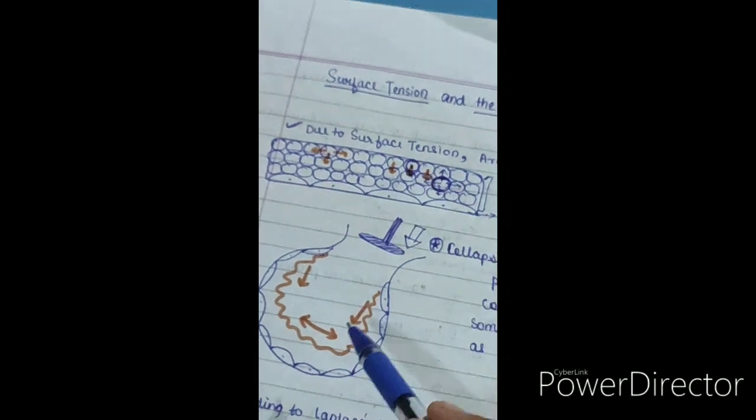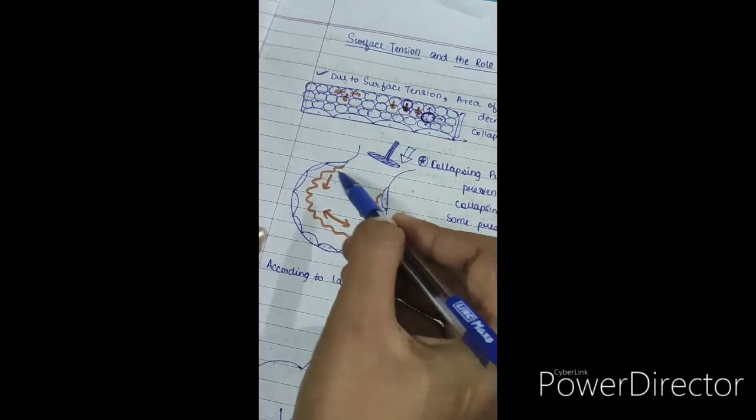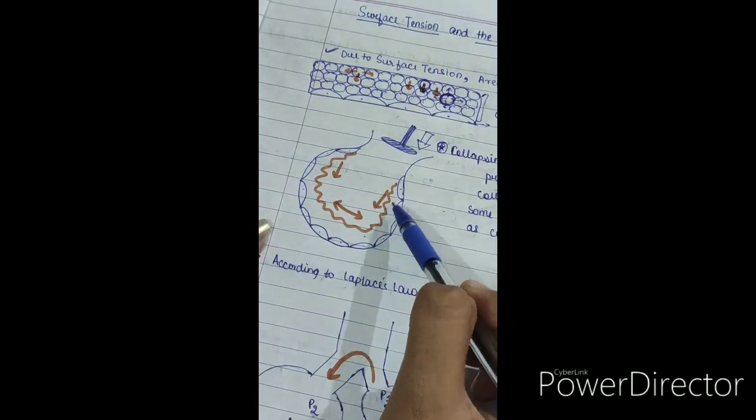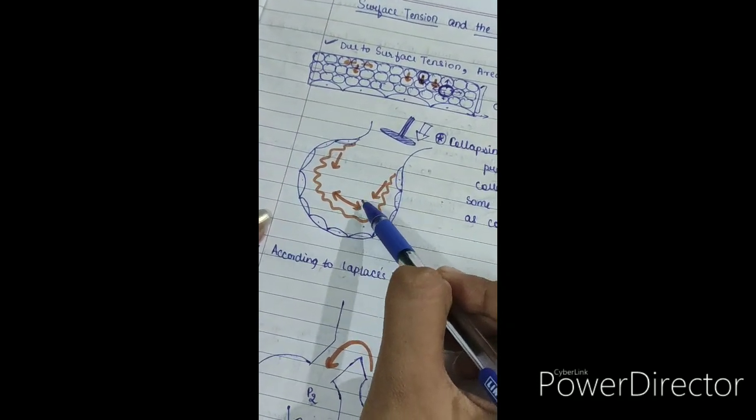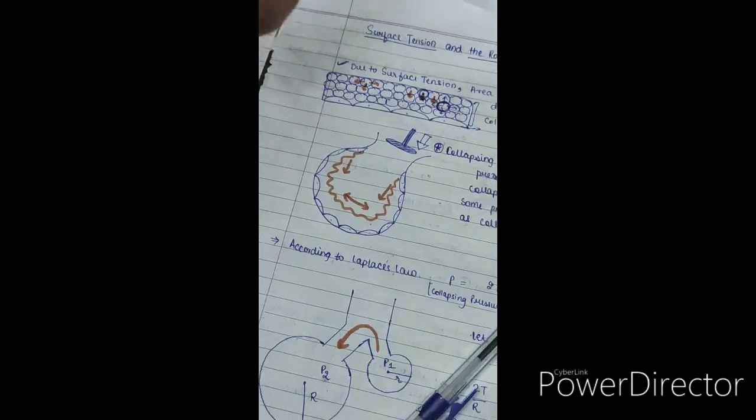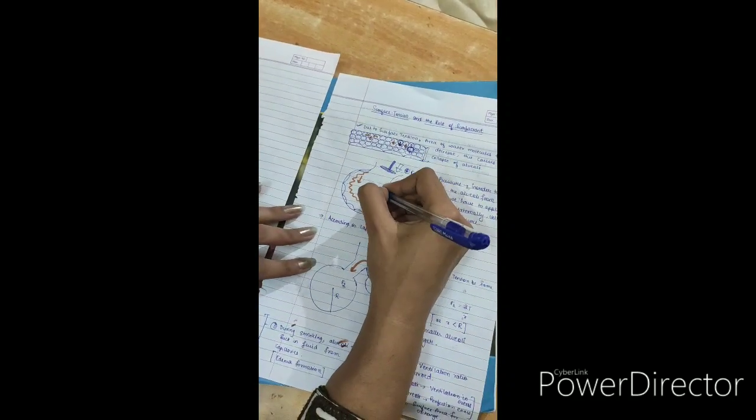If we look at this alveoli, then we will see that the surface area of this alveoli is trying to decrease. As a result, alveolar epithelium and alveoli are trying to collapse. So as a result, the air is trying to push out.